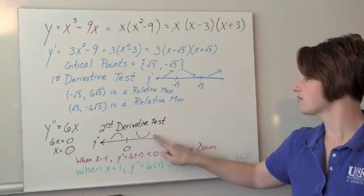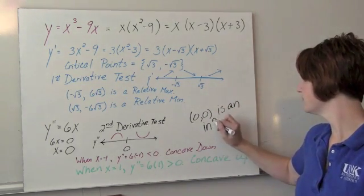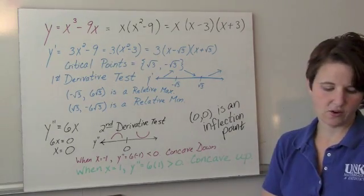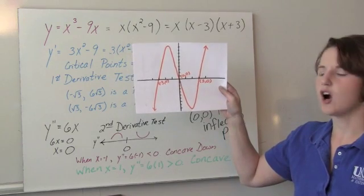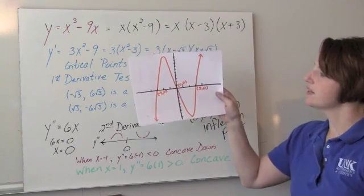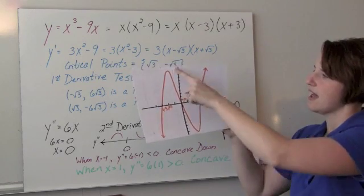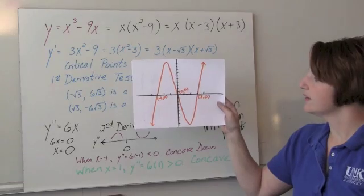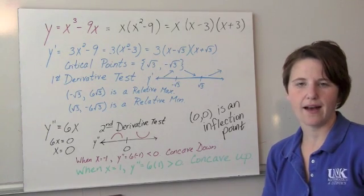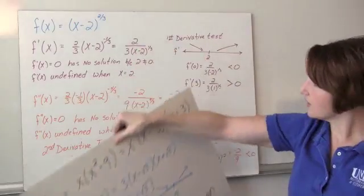The graph changes from concave down to concave up, so the point at x equals 0 is an inflection point. Looking at the graph of the function, the x-intercepts are labeled, the graph is concave down left of 0 and concave up right of 0, with the local min and max also showing. We'll be using the first and second derivative tests to sketch graphs in a later lesson, but we can start now.